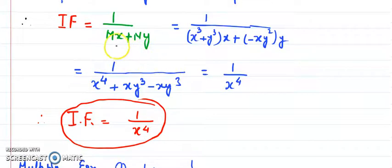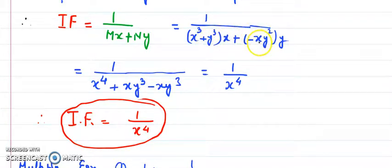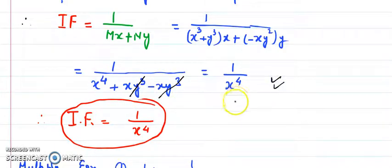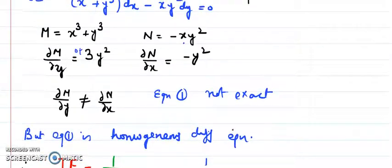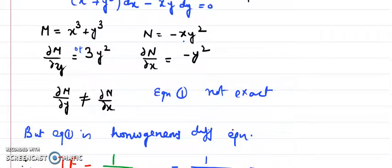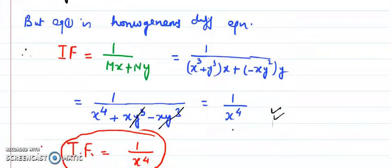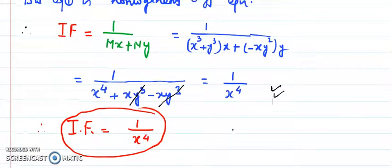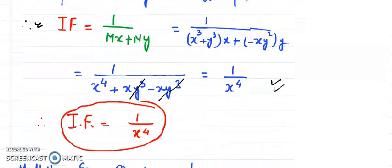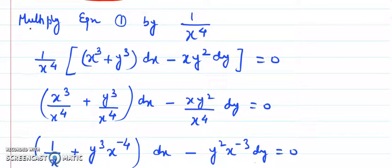The formula requires multiplying M by x and N by y and adding them. Here M is x³ + y³, multiplied by x, and N is −xy², multiplied by y. After adding and simplifying, the xy³ terms cancel (being opposite in sign) and we get one upon x⁴ as the integrating factor. The next step is to identify the type, confirm it is homogeneous, apply the formula, and find the integrating factor.